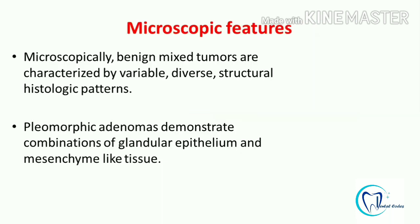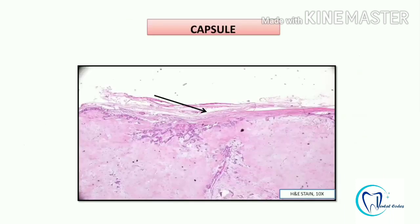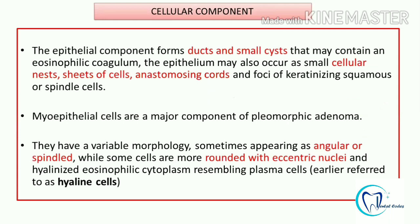Now coming to the microscopic features: this is a tumour which shows a bizarre pattern. The bizarre term is used because there is variation and diversity in the structure and histology, as there is a combination of epithelium and mesenchymal-like tissue. In pleomorphic adenoma we see the capsule, epithelium in the form of ducts, sheets, strands, cords, and the stroma. The stroma could be myxoid, chondroid, or osseous depending on the extracellular matrix produced by the myoepithelial cells. The fibrous capsule surrounding the tumour mass is a feature of benign tumours. The epithelial component forms ducts and cysts, and the epithelium may also form sheets, strands, and anastomosing cords. There may also be foci of squamous or keratinizing cells.